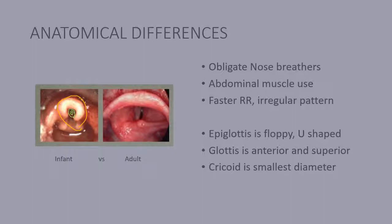Versus in the adult, this is the epiglottis, and these are the vocal cords, and this is the trachea. So you can see the difference in size and shape.